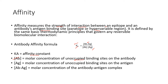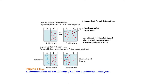The molar concentration of unoccupied binding sites on the antibody before reaction, and the molar concentration of unoccupied binding sites on the antigen, are used in the equilibrium equation. After interaction, the molar concentration of the antibody-antigen complex is formed. The affinity constant can be determined in the laboratory using equilibrium dialysis — a dialysis chamber with two equal compartments separated by a semi-permeable membrane — using a radioactively labeled ligand small enough to pass through the membrane, such as haptens and oligosaccharides.